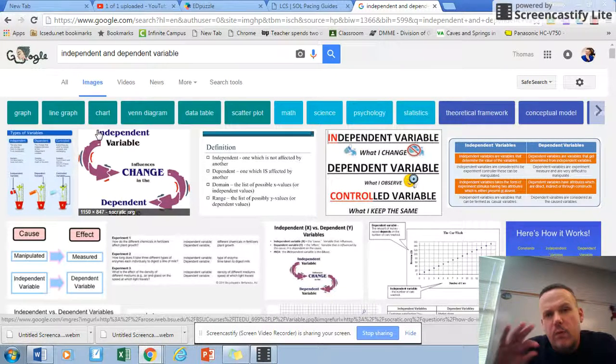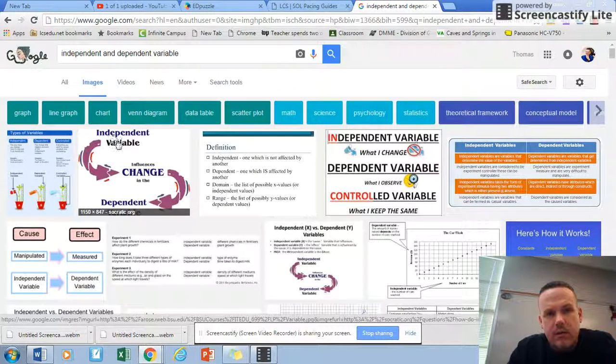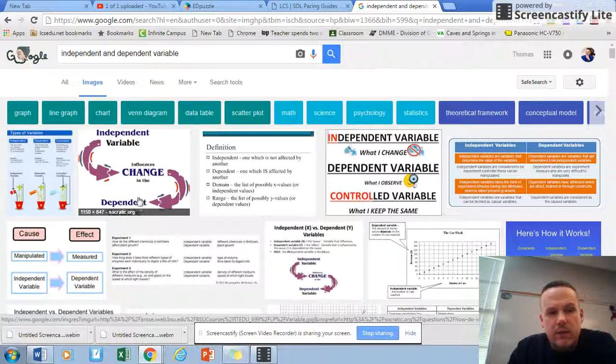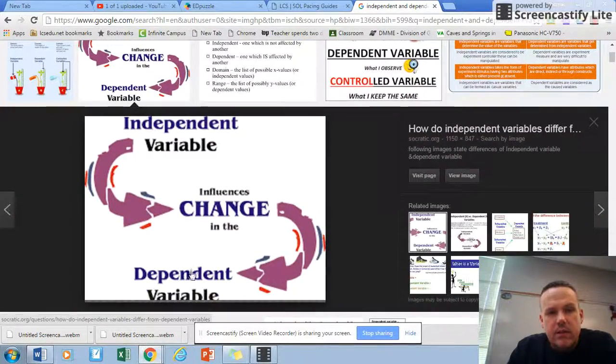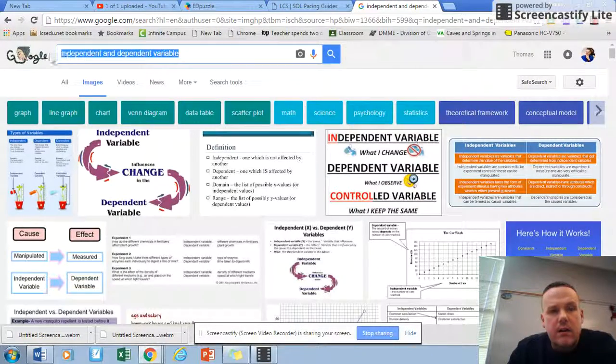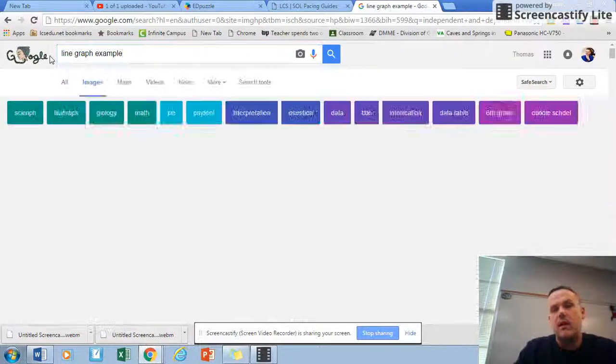If I fool around with the independent variable - say, for example, I'm doing a study on plant growth and I want to see what type of plant growth is best in what type of light. So I change the light type, the independent variable. That's going to have an impact upon the dependent variable, which is the plant growth. So I change this, which influences the dependent. Now to see it on an x-y-axis, the way I do is type in line graph example. I'm sure I'm going to pull up something.